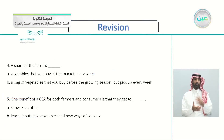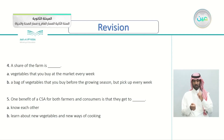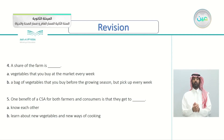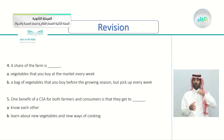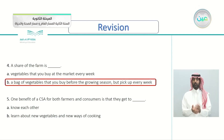Question four: a share of the farm is A, vegetables that you buy at the market every week, or B, a bag of vegetables that you buy before the growing season but pick up every week. The correct answer is B — it's a bag of vegetables that you buy before the growing season, then pick up every week.